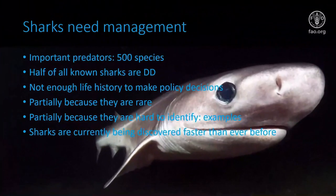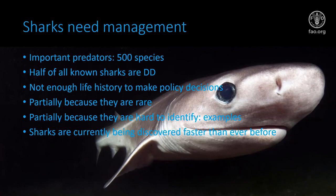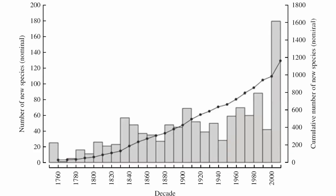Sharks are poorly managed, and that's mostly because they are so poorly known. Half of all shark species are data deficient, because some species are very rare and also because they're hard to tell apart — so it's hard to get information if we can't figure out what species they are. Sharks are currently being discovered at a rate that exceeds any previous time in history, even faster than the beginning of the Linnaean naming system, and as a result, taxonomy and being able to identify sharks is more important than ever before.